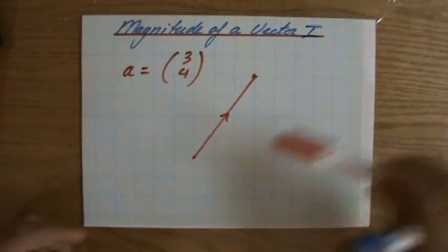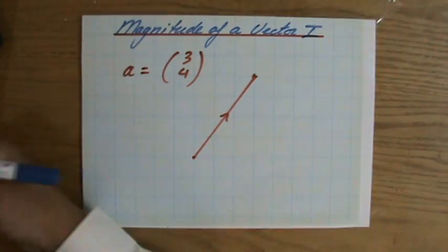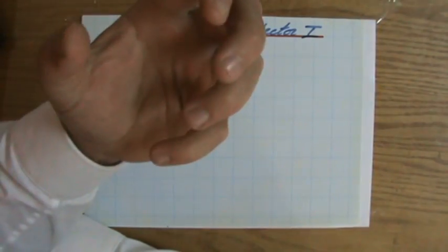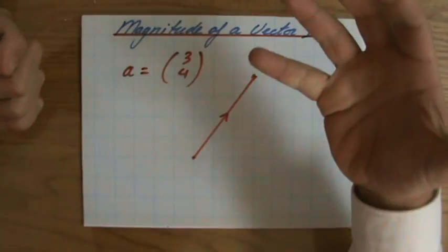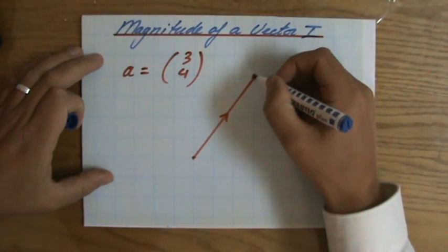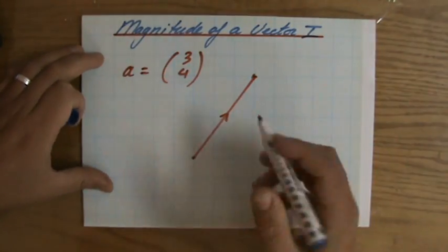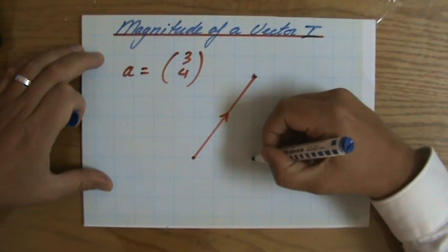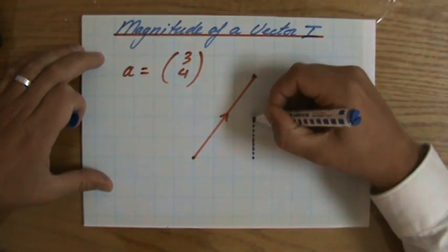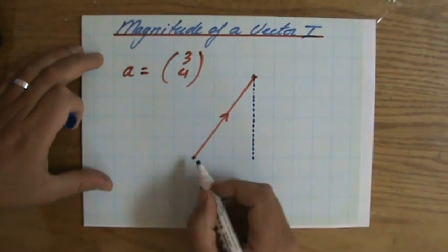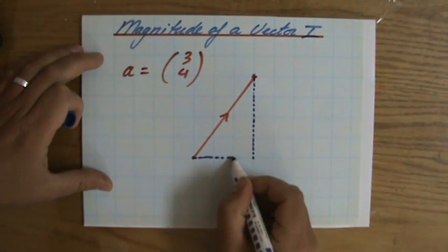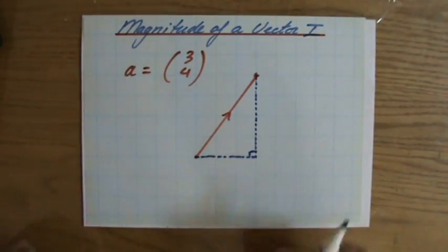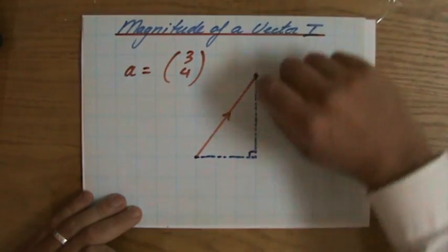Hopefully you're telling yourself now: well, we've done some trigonometry or some Pythagoras theorem. We were calculating lengths, but those lengths were always in right angle triangles. So when you're calculating the magnitude of a vector, you are going to always, or pretty much always, create your own right angle triangle.